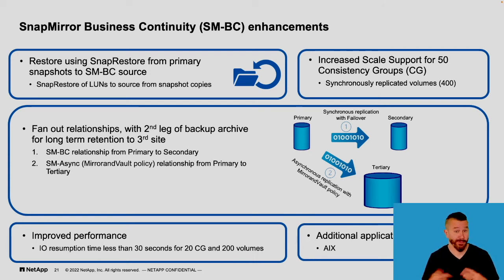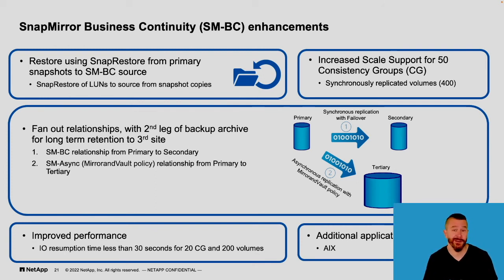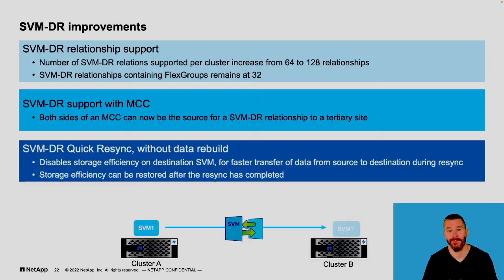We've improved the performance of SnapMirror Business Continuity, reducing recovery times. Now we can achieve a recovery time of less than 30 seconds for up to 20 consistency groups and 200 volumes — which would be quite a large application. And finally, we added OS support for IBM AIX servers.